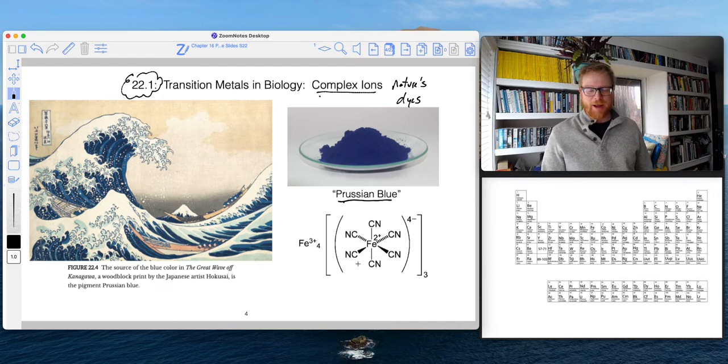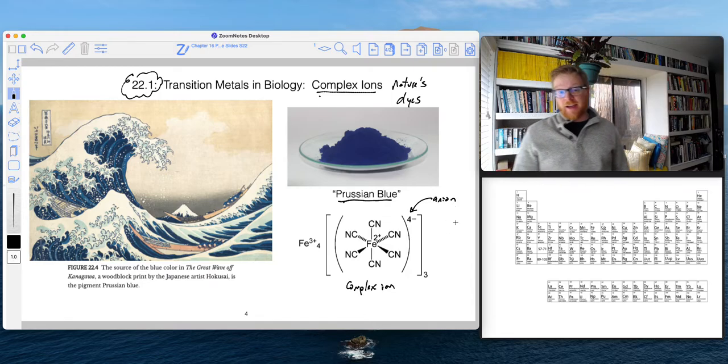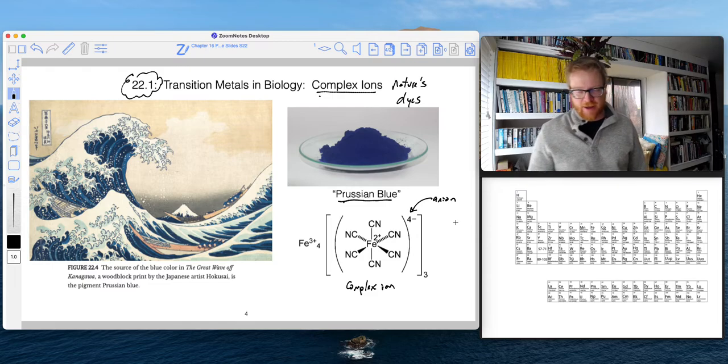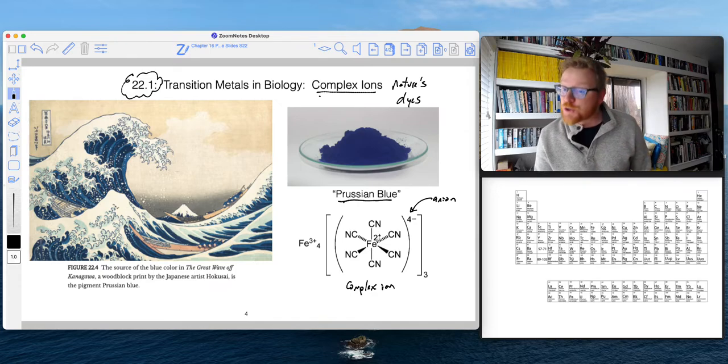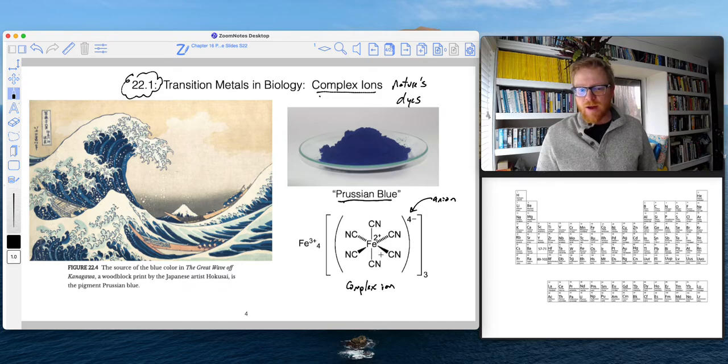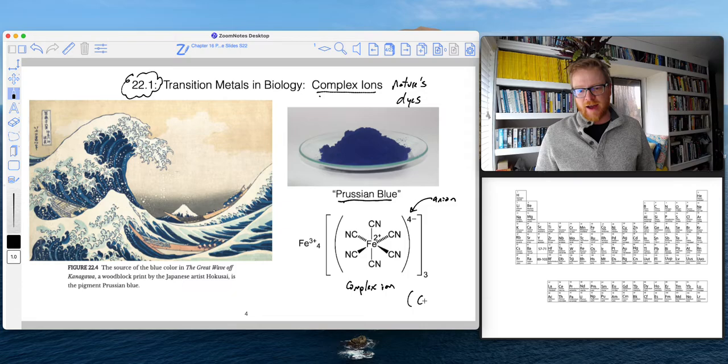This part is our complex ion, and as you can see it's an anion because it's got the negative charge. Not all complex ions are anions; some of them are cations. This complex ion is composed of an iron 2+ central metal. So there is this cation central metal, however it's bonded to one, two, three, four, five, six cyanides.